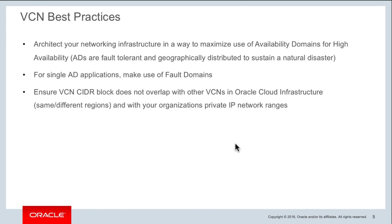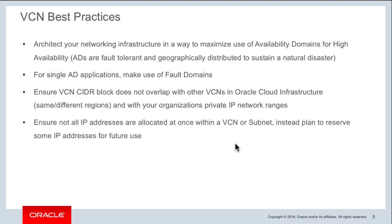When designing your VCN, make sure that your VCN CIDR ranges are not overlapping, because if you want to do any VCN peering later you won't be able to do so. It's best to avoid any overlapping of VCN CIDRs right from the start. You should also make sure that the ranges you set up within the cloud don't overlap with your organization's private IPs within your customer premises equipment. Ensure that not all IP addresses are allocated upfront when a VCN or subnet is created — keep enough resources in reserve for future scaling.